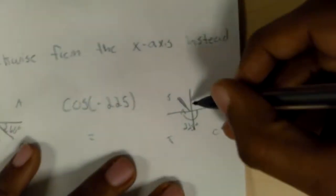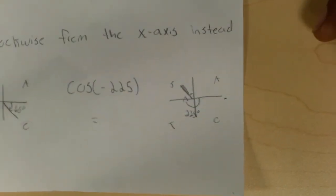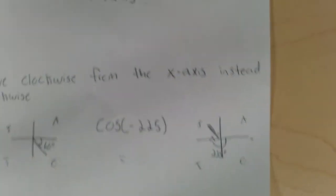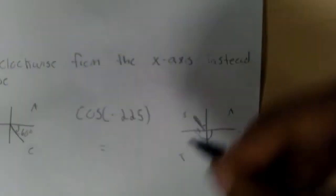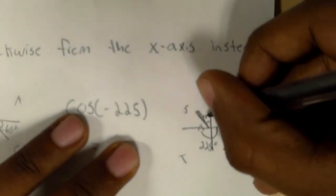And to find the related angle, you'd have to do 180 minus 225, or 225 minus 180, it gives you 45 degrees.